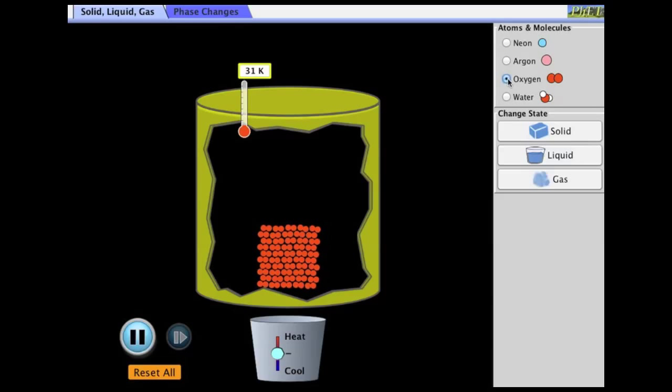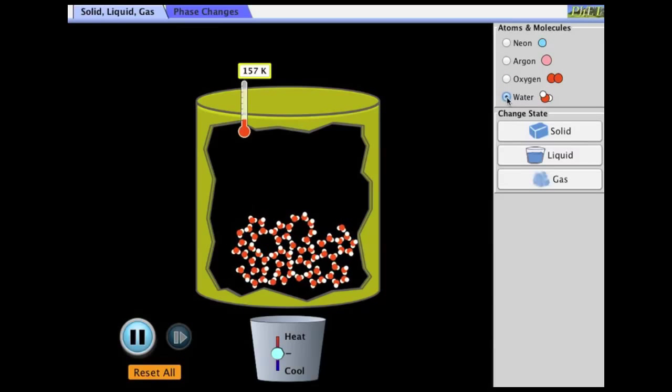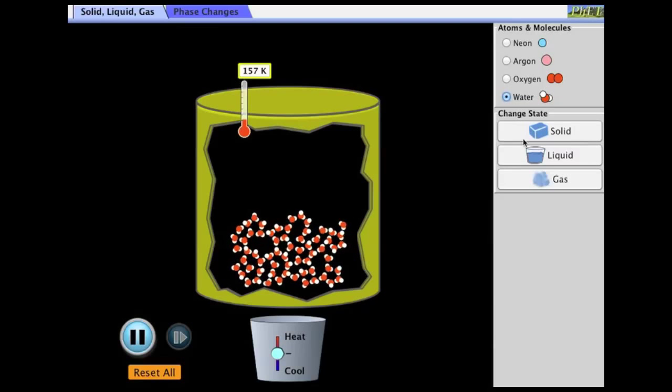Now, here's oxygen solid at 31 Kelvin. Again, vibration of the particles. And water in its solid form at 157 Kelvin. Again, able to vibrate, but not rotate nor translate.